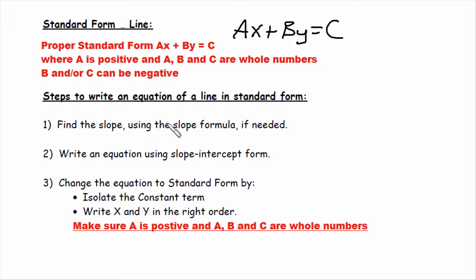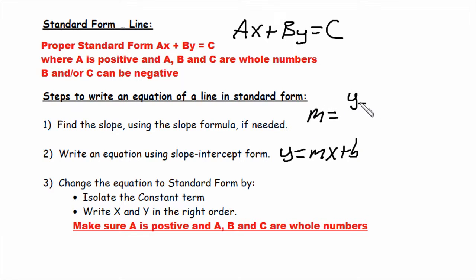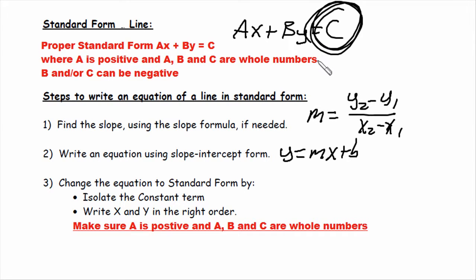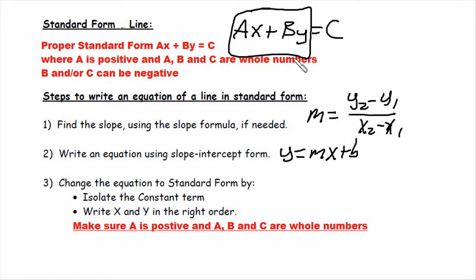Steps to write an equation in standard form: First, find the slope using the slope formula if needed. Second, write an equation using slope-intercept form — y equals mx plus b — where slope is m equals y2 minus y1 over x2 minus x1. Third, change the equation to standard form by isolating the constant term. Write x and y on the same side, x first. Make sure a is positive and a, b, and c are whole numbers.